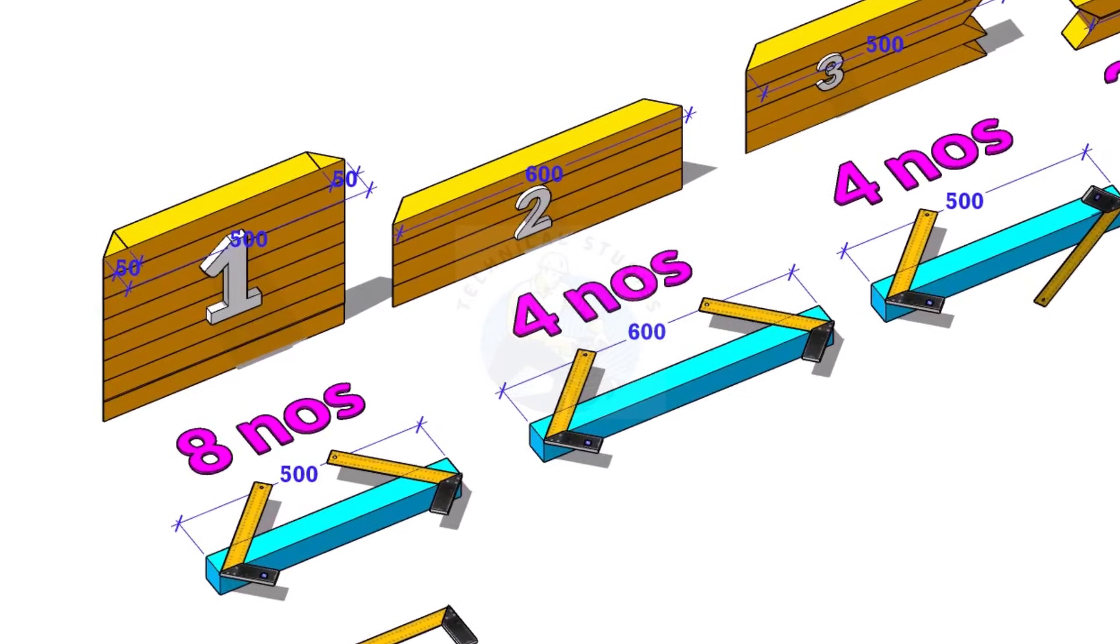You have seen the size of the cube is 600 by 600 by 600 millimeters. The width of the material I used is 50 millimeters, but you can use any size.